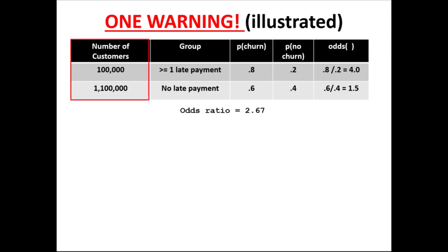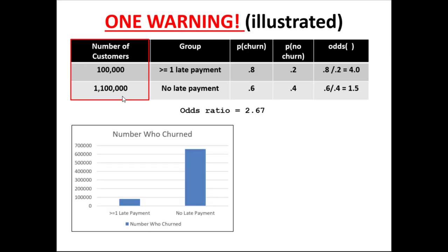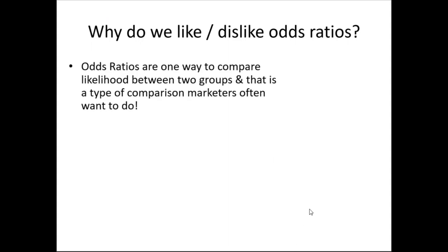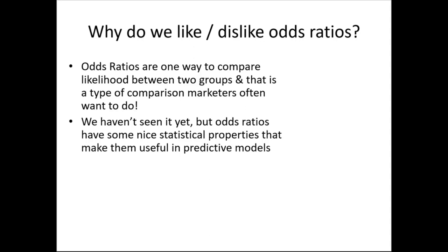Adding total customer counts to our table, notice the late-payment group is relatively small compared to the no-late-payment group. Even though late payers are much more likely to churn, there simply aren't as many of them, so total churns may be lower in that group. A group can simultaneously be more likely to exhibit a behavior yet account for fewer total occurrences because of a small baseline. Odds ratios are useful for comparing likelihoods, and they have nice statistical properties for predictive models — though they're less intuitive for those unfamiliar with gambling or odds-style thinking.